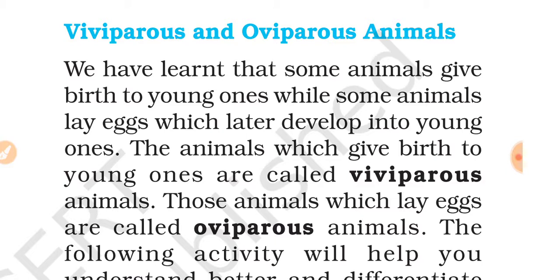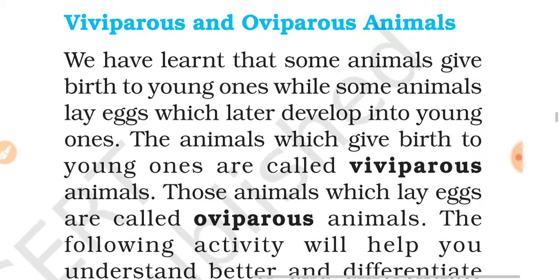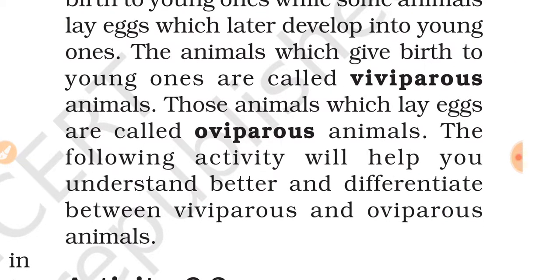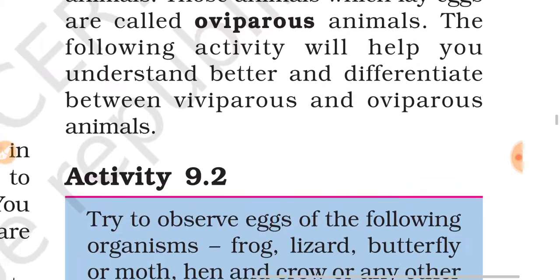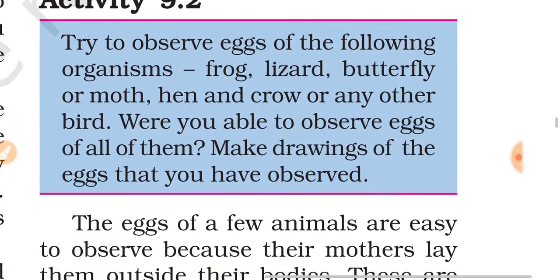We discussed viviparous and oviparous animals, which you need to know. We learned that some animals give birth to young ones while some animals lay eggs which later develop into young ones. The animals which give birth to young ones are called viviparous animals, and those animals which lay eggs are called oviparous animals.